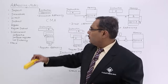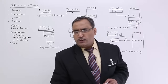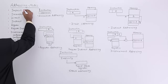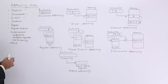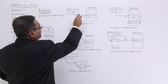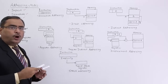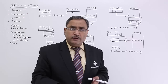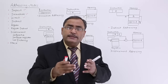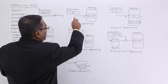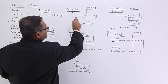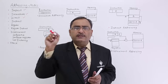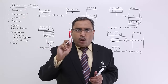Next is direct addressing mode. In case of direct addressing mode, the instruction contains the opcode and in the remaining part, it contains the address of the memory location where the operand can be found. So the address is referred, and at that memory location — address A — you get your operand or data.